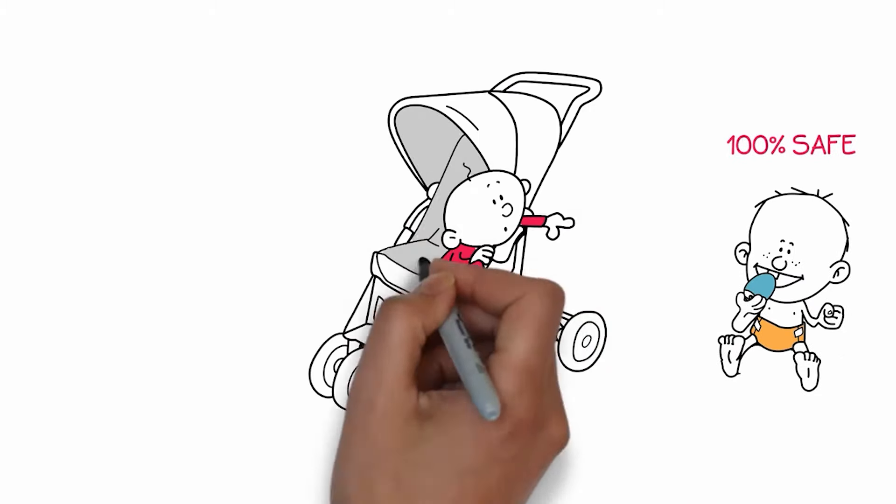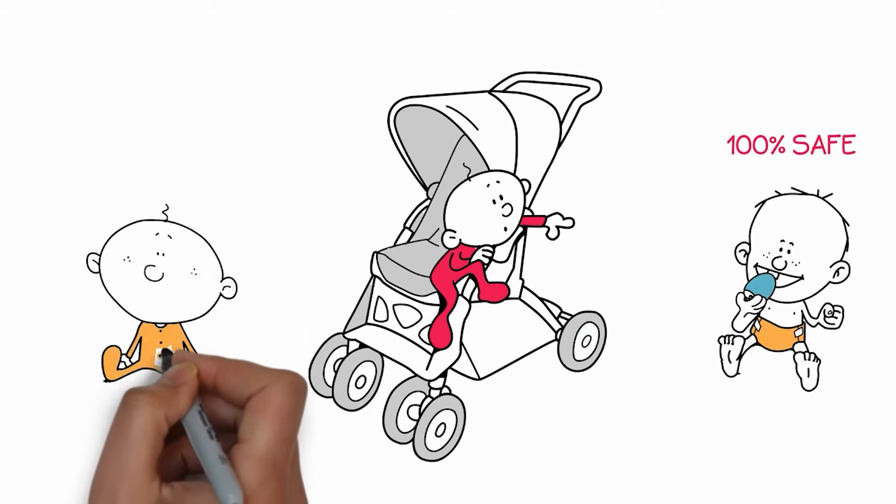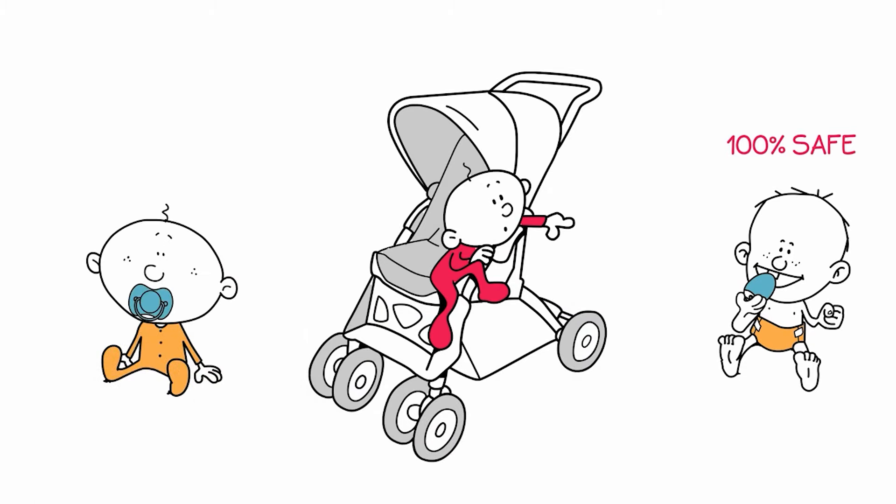Babies are instinctively drawn to round, breast-shaped objects, and the Teething Egg is a great replacement for pacifiers that often reinforce bad habits.